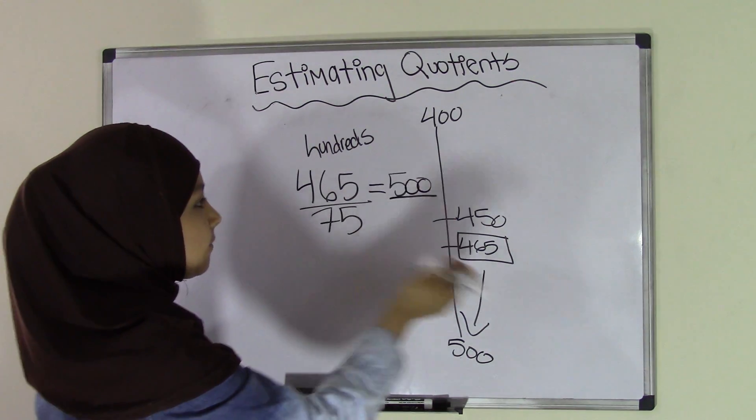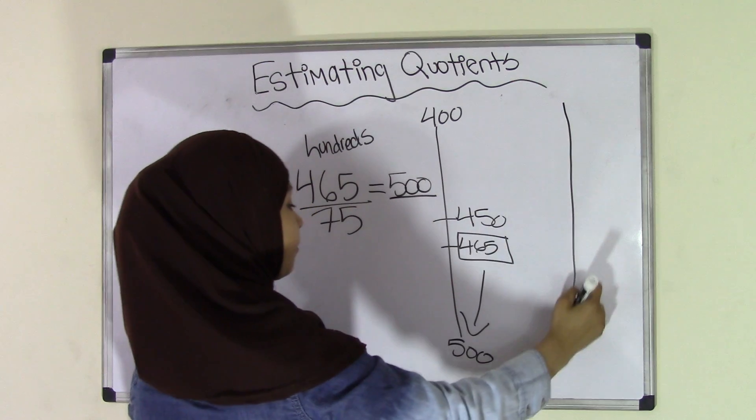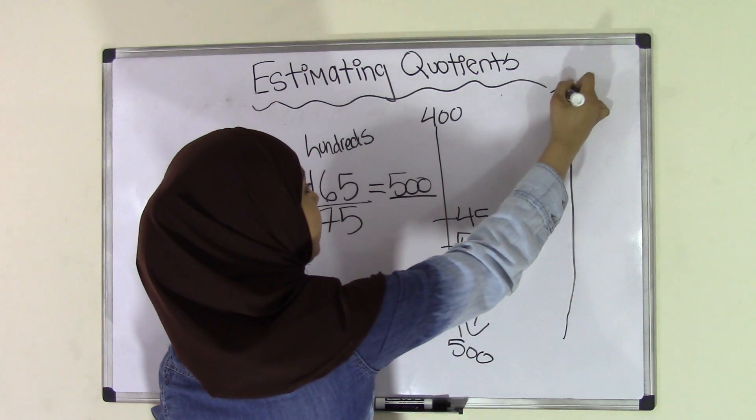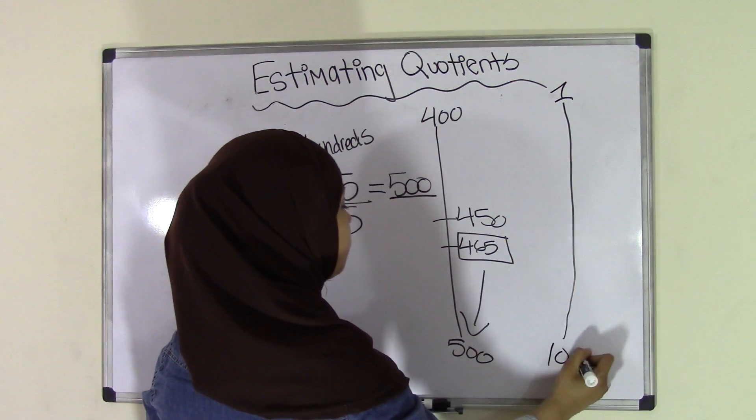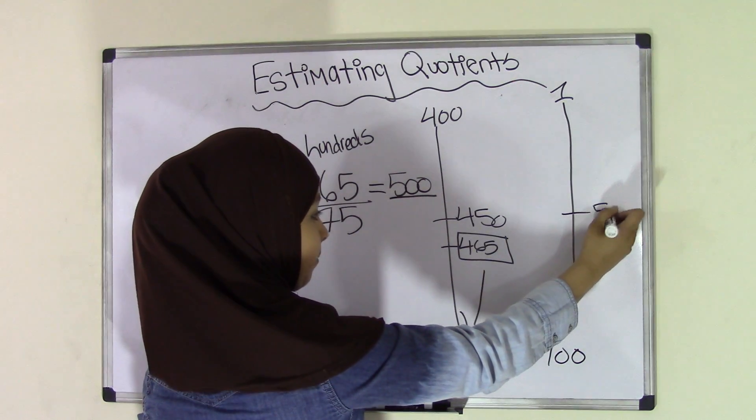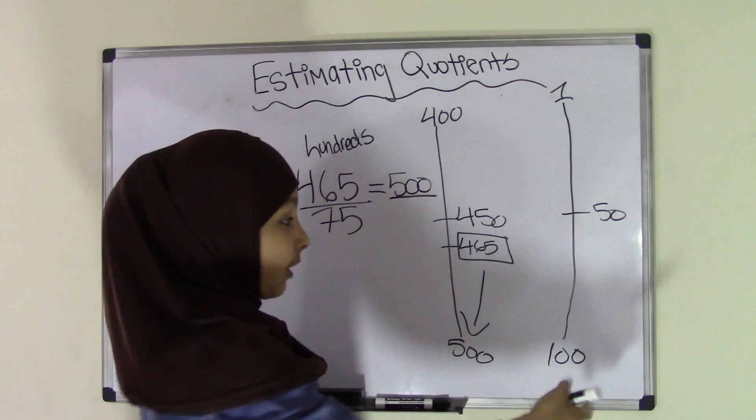And now if we take a look at 75, let's create another one here. So here we're going to have 1, and here we're going to have 100. In the middle would be 50. 75 is greater than 50, once again.